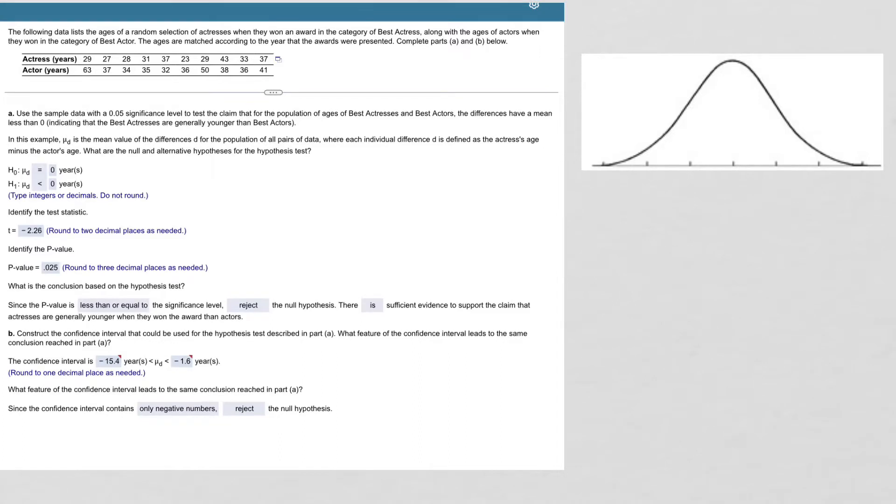In this problem, we have a list of the ages of a random selection of actresses when they won an award and the ages of actors when they won an award in the same year. So we have this paired set of data.